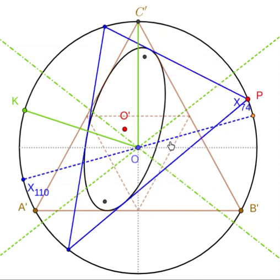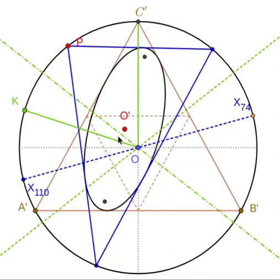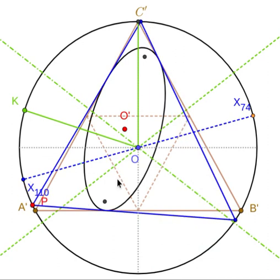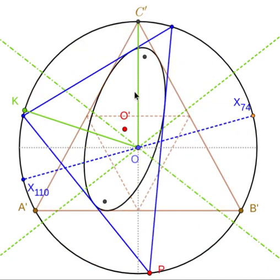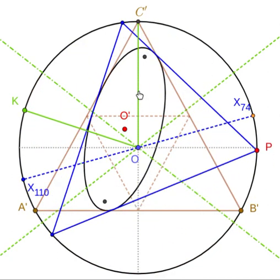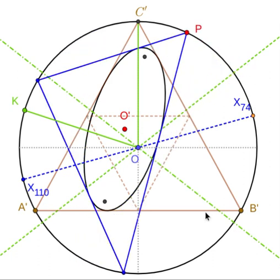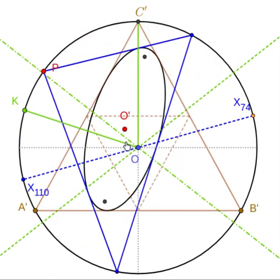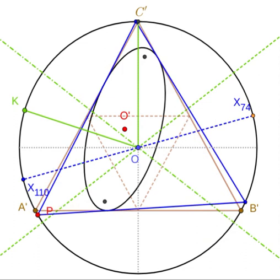Now for now I want you to ignore the green stuff here, I'll talk about this in a minute. So what am I showing here? I'm showing the foci of the caustic, the stationary axis, the base equilateral. Now the question that has been asked is the following.